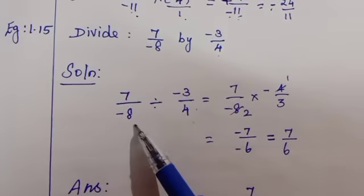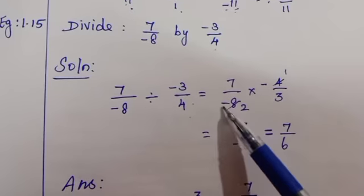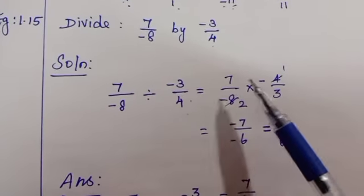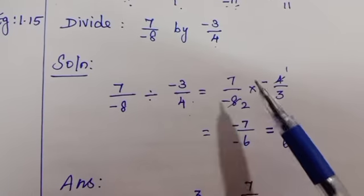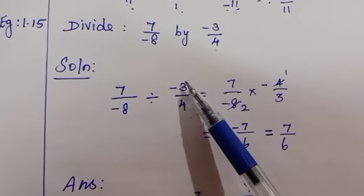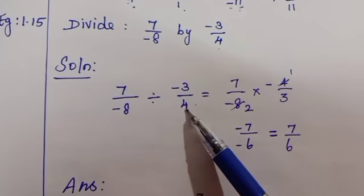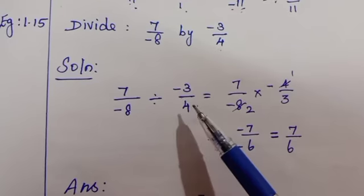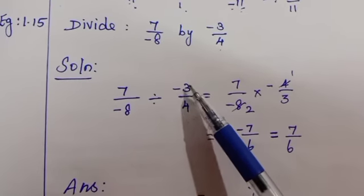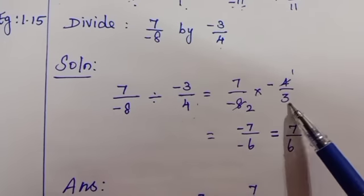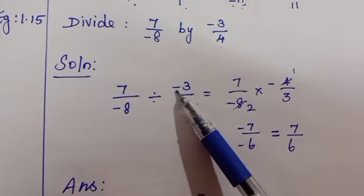So 7/(-8), the first fraction number, same number taken. Then change this division to multiplication. Then you have to take a reciprocal. Reciprocal means you have to change the numerator and denominator values. Numerator moves to denominator, denominator moves to numerator. Reciprocal of -3/4 is -4/3. The sign does not get any changes.